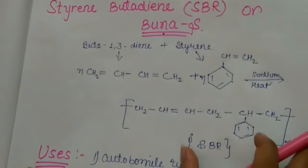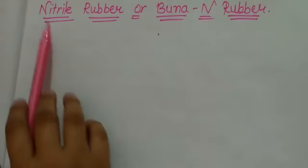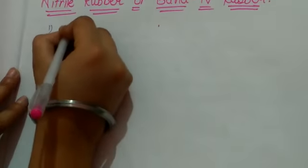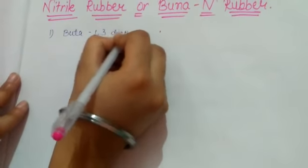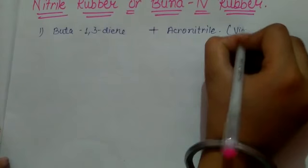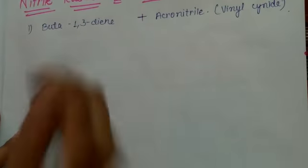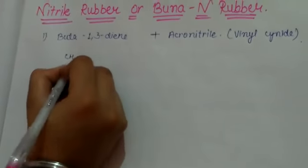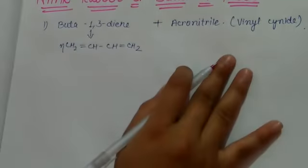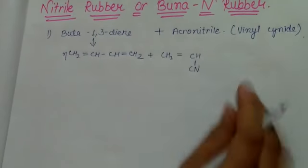Now after you complete this, we'll go ahead to nitrile rubber or Buna-N rubber. To prepare nitrile rubber, you need two monomers. One monomer is the same buta-1,3-diene and second monomer is acrylonitrile. Acrylonitrile is also called vinyl cyanide, which is CH2 double bond CH-CN.